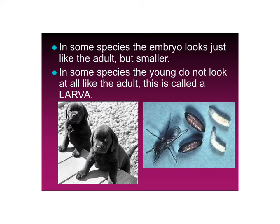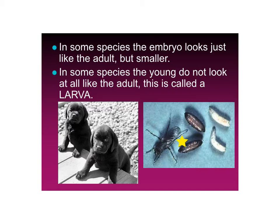When the young don't resemble the adult, they are called a larva. For instance, this is a fly larva — we call it a maggot. The same thing holds for butterflies and caterpillars. Flies start out like this, then go inside what's called a pupa. During the course of time, they change inside that pupa, and when they emerge, they look like the adult fly. They go through this change of life.